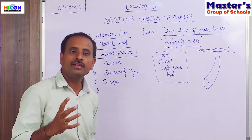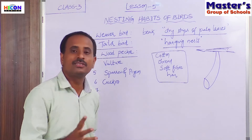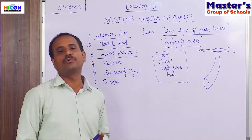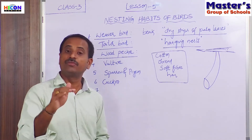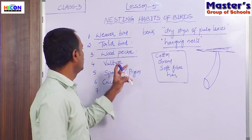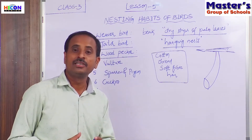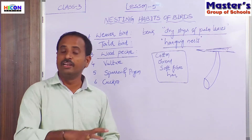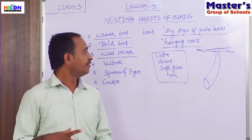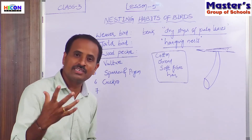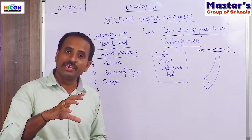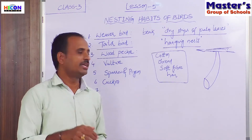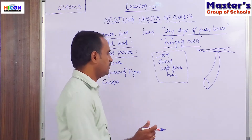The woodpecker builds its nest with the help of its strong beak by pegging into the trunk of the tree. Most birds build their nests on the branch of the tree, in between the leaves, whereas the woodpecker builds its nest in the trunk of the tree by making a hole and lining it with soft chips of wood.